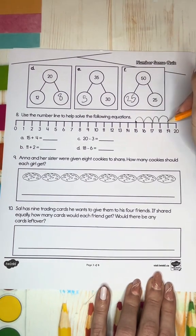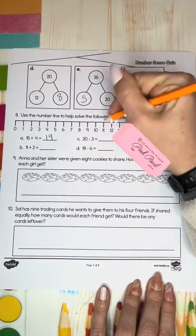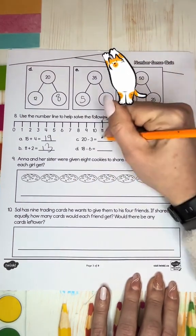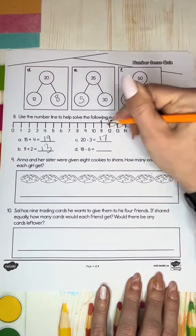In grade one we also learned a number line. Do you remember this? I remember so much erasing. It's when you start at a number and you jump a few steps or you go back a few steps depending if you're adding or subtracting.